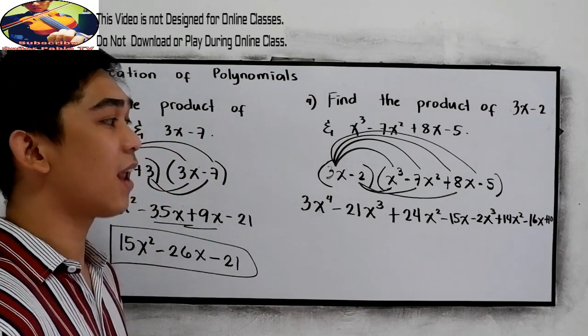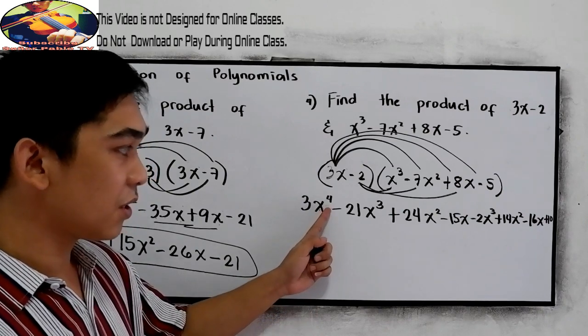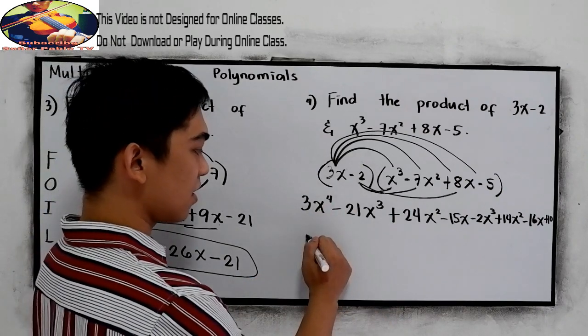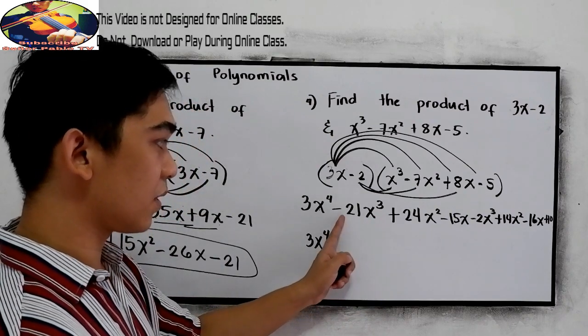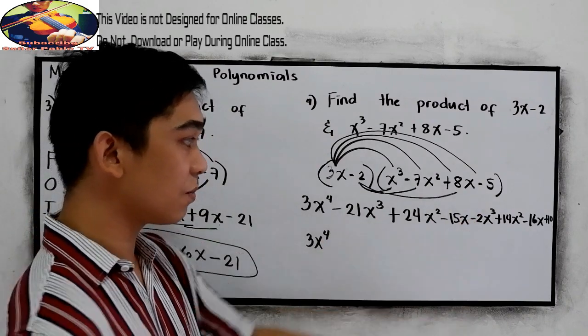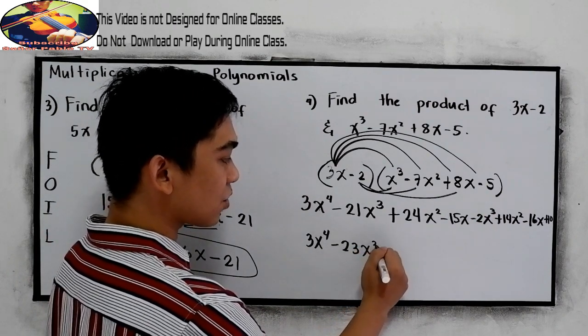Now ready to combine like terms. So for x raised to 4, just copy. 3x raised to 4. For cube, negative 21x cubed minus 2x cubed. That is negative 23x cubed.